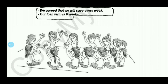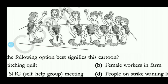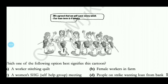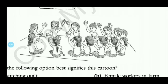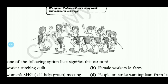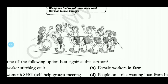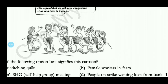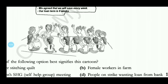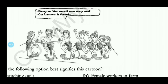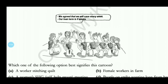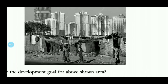Next, you will see a self-help groups image showing a worker stitching a quilt, a women worker in a farm, and a women self-help group meeting. The answer is the self-help group meeting, with an emphasis on women. It is not people on strike wanting a loan from a bank. This is the self-help group image.